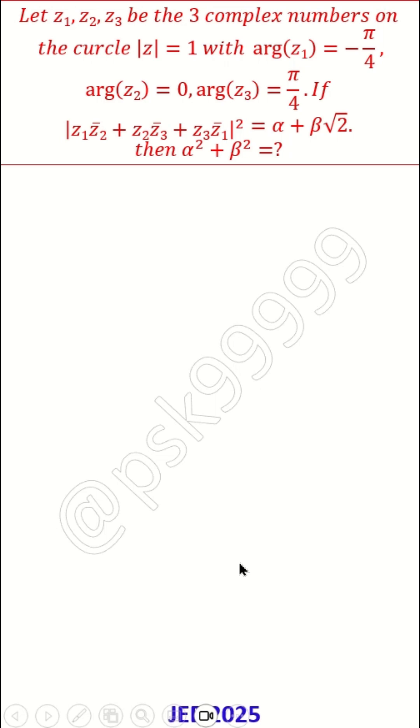z1, z2, z3 are 3 complex numbers on the curve absolute z equal to 1 with arg of z1 equal to minus pi by 4, arg of z2 equal to 0 and arg of z3 equal to pi by 4. If the given expression is alpha plus beta root 2 square root of 2, then what is alpha square plus beta square?